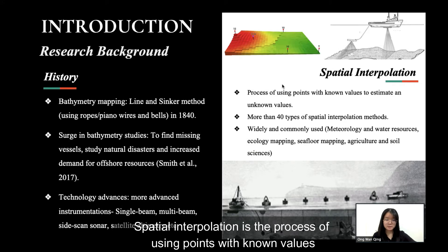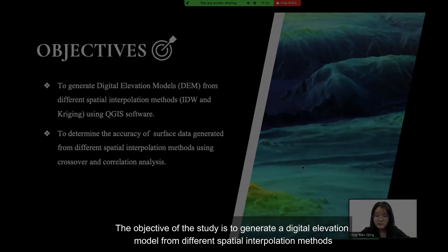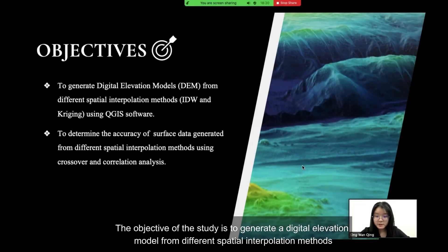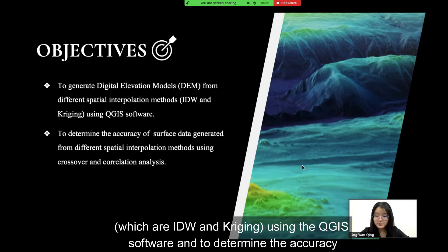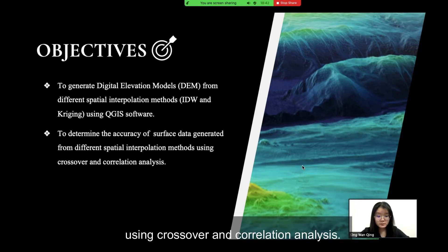Spatial interpolation is the process of using points with known values to estimate unknown values, and they are widely used in many fields. The objective of the study is to generate a digital elevation model from different spatial interpolation methods, which are IDW and Ordinary Kriging, using QGIS software, and to determine the accuracy of surface data generated from different spatial interpolation methods using crossover and correlation analysis.